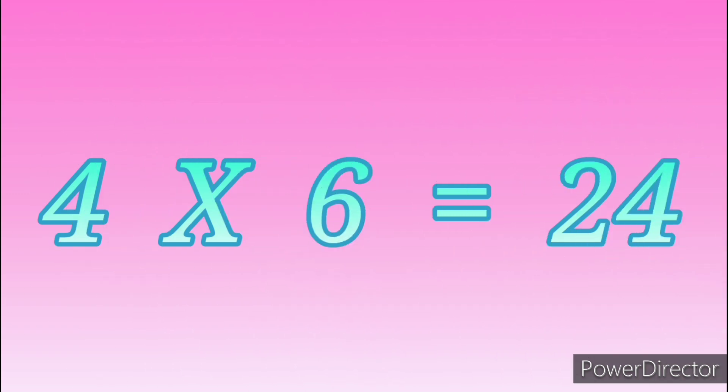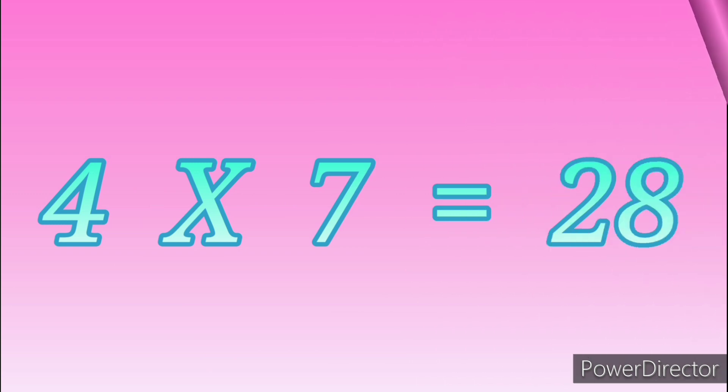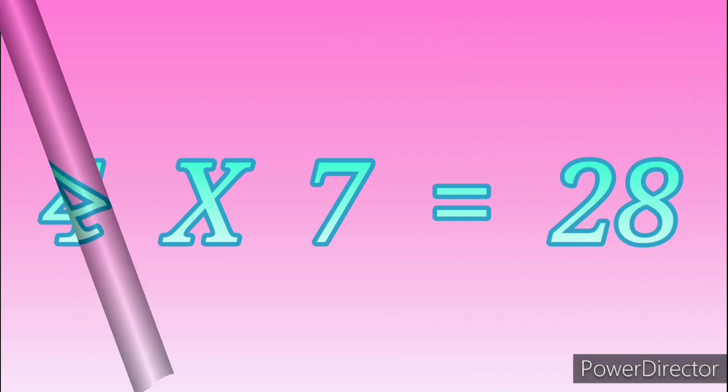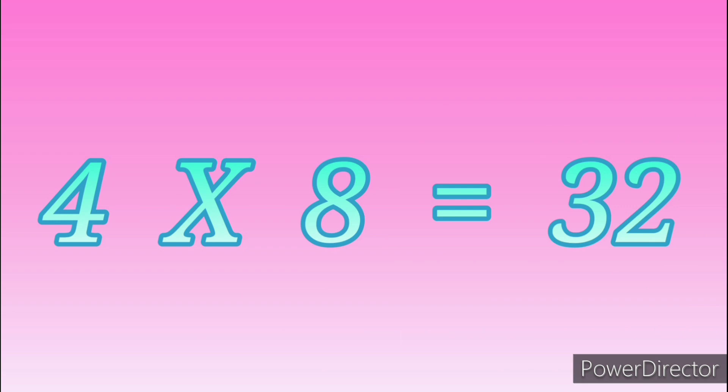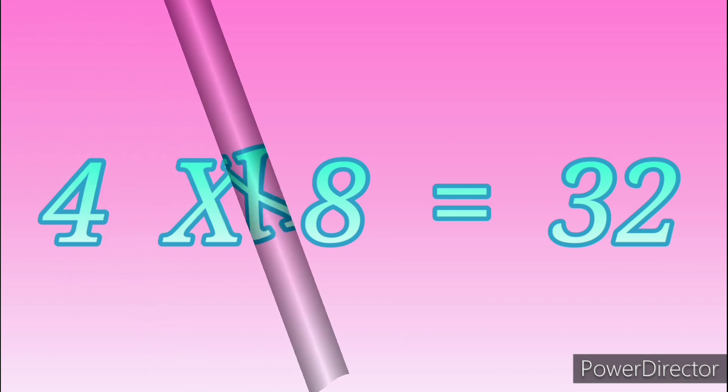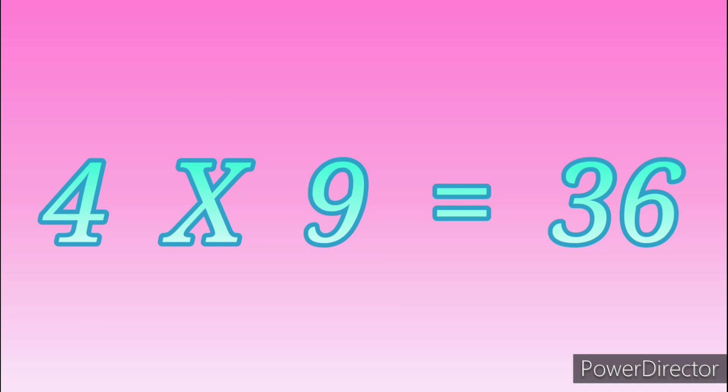4 sevens are 28, 4 eights are 32, 4 nines are 36.